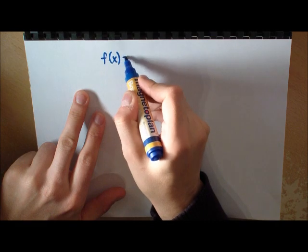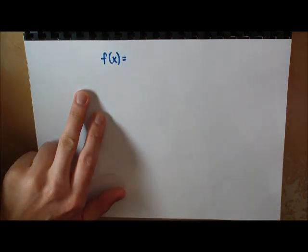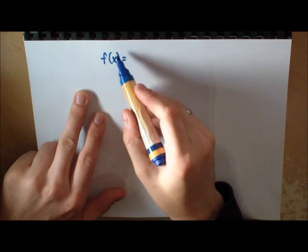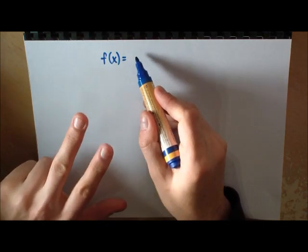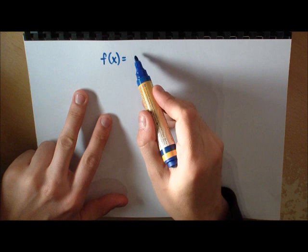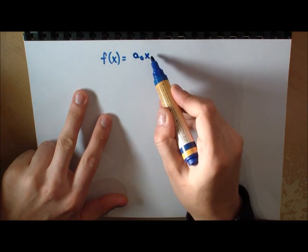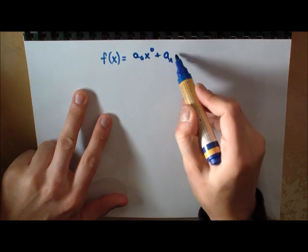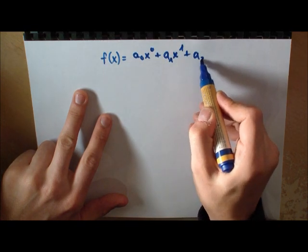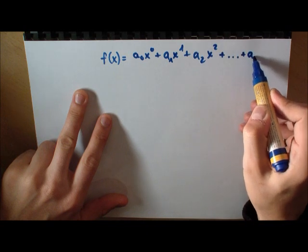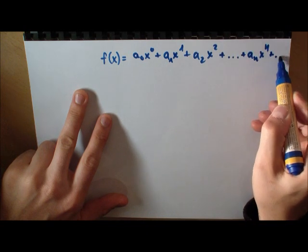Now, what is the Taylor series? Well, Taylor, and actually it was not only Taylor, many mathematicians knew this before, discovered that a function in x could be rewritten in this way. It could be rewritten as a₀x⁰ plus a₁x¹ plus a₂x² plus and continue aₙxⁿ and go to infinity.